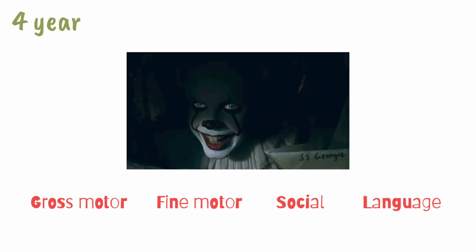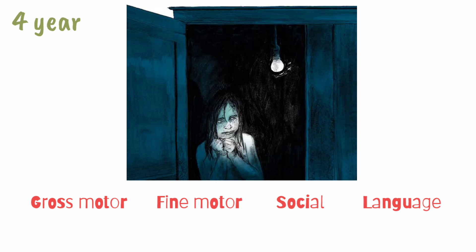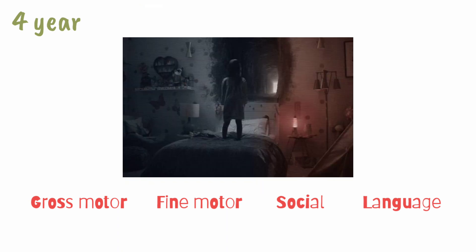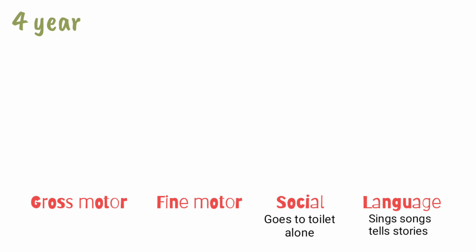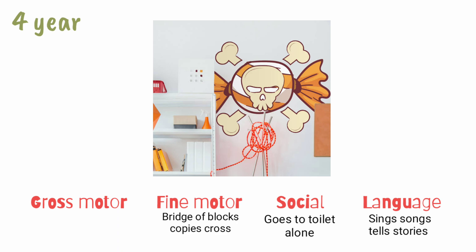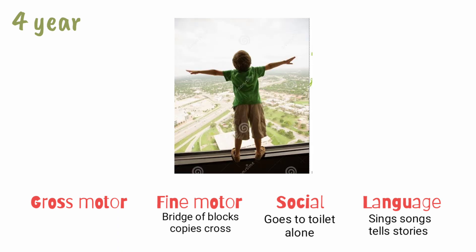For the four-year age group, imagine a horror Hollywood movie in which small children have their own separate room in the house, and the ghost targets the children. In that child's room there is an attached toilet, and in that toilet there is a ghost. The child goes alone to that toilet and is quite frank with the ghost — they tell stories to each other, sing songs, and the ghost asks the child to make a cross symbol with colors in the washroom. One day the ghost asks the child to jump from the window, so the child hops on the toilet seat on one foot and with alternate feet jumps from the window, falling on a bridge.